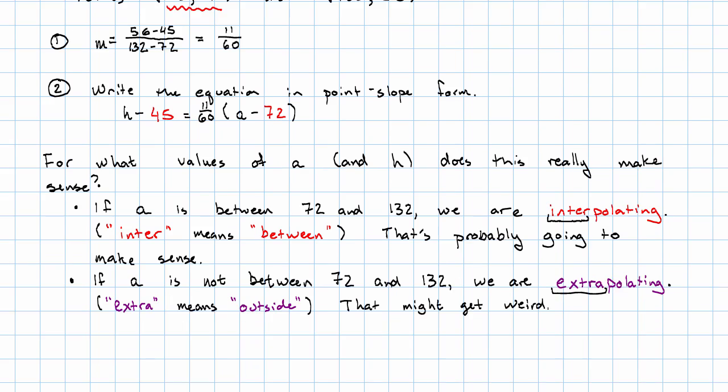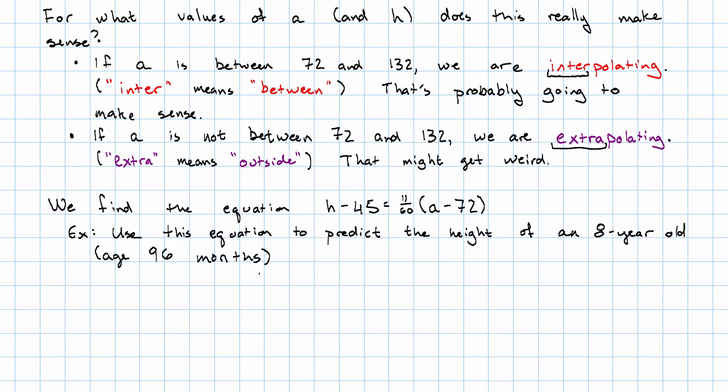That might get weird. What do I mean? Suppose we want to use this equation to find the age of an eight-year-old. So that's 96 months. That's nicely between 72 and 132. So we'll take the age eight and plug it in. On the right-hand side, we just have a bunch of arithmetic to work out, which sounds like a job for my calculator.